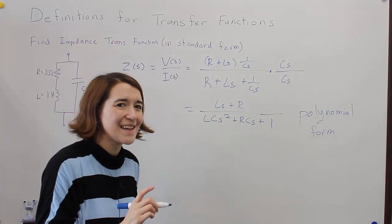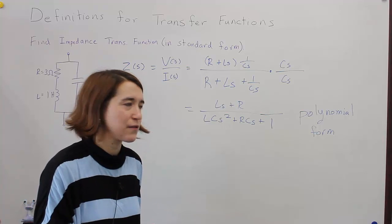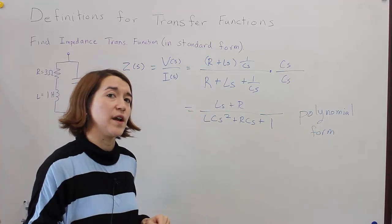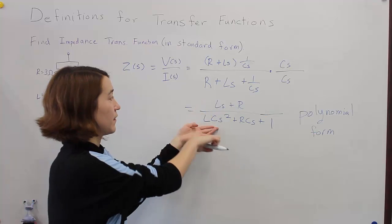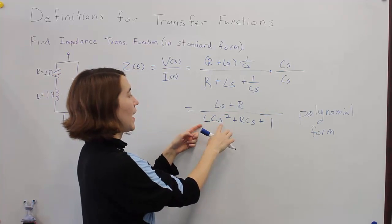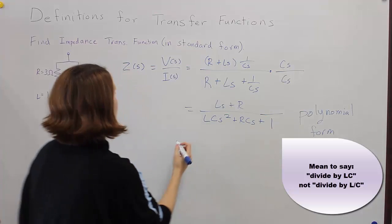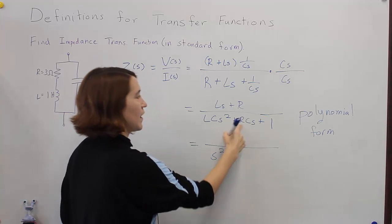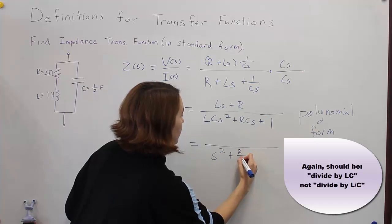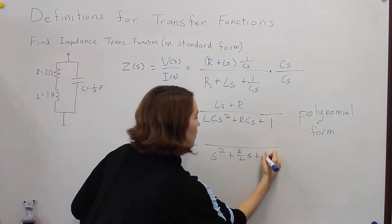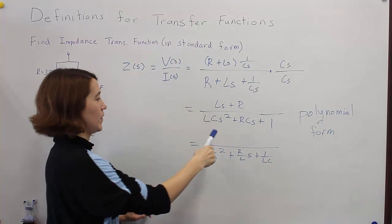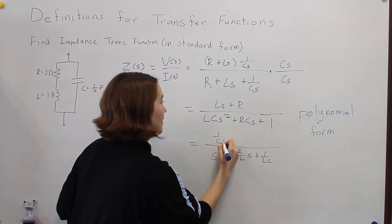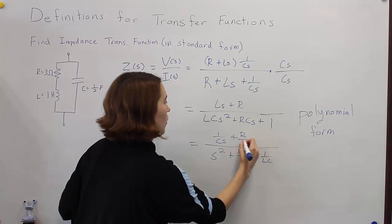This is polynomial form but not yet standard form. To get to standard form, we need the highest-order term in both the numerator and denominator to have a coefficient of one — unity. The highest order term here is LCs squared. To eliminate that coefficient, we divide both sides by L over C, giving us S squared plus R over L times S plus one over LC in the denominator.